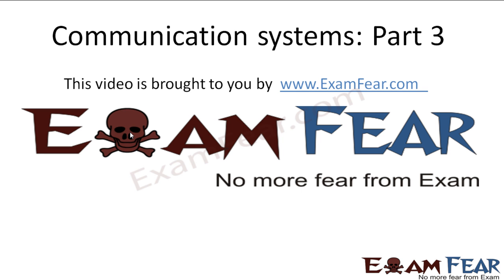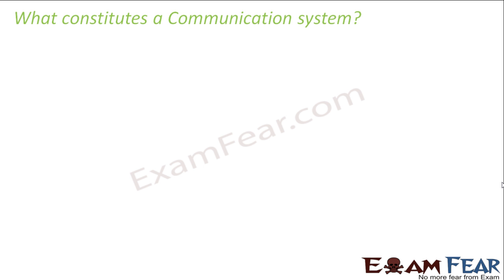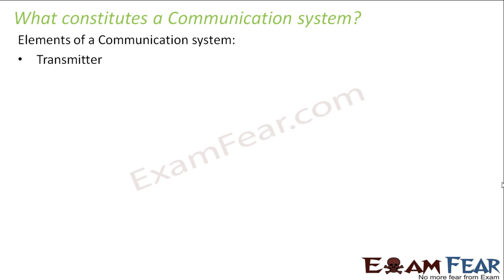Hello friends, this video on communication systems part 3 is brought to you by examfeel.com. Let us look at the important elements which form a communication system. The most important and basic elements needed to form a communication system are: transmitter, channel, and a receiver. These are the three basic constituents of any basic communication system.